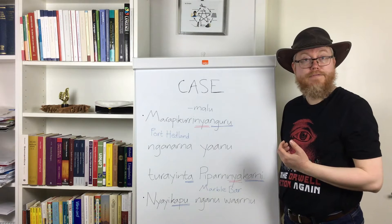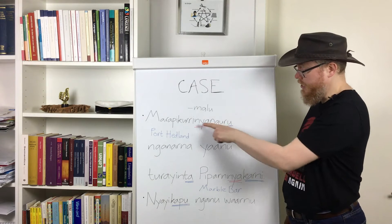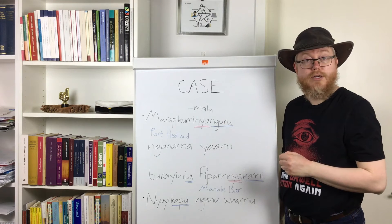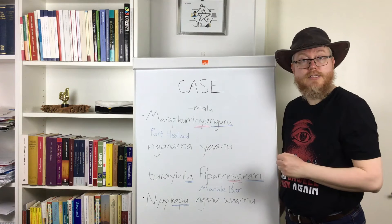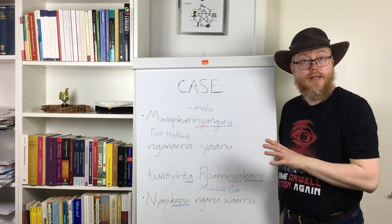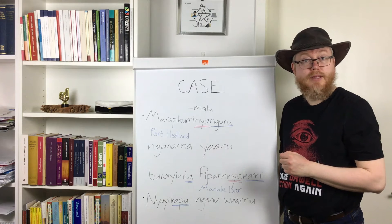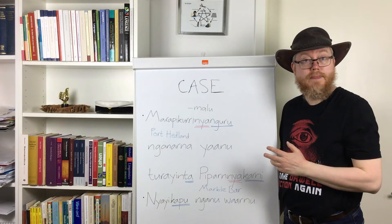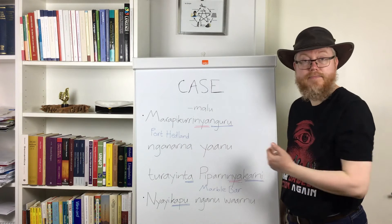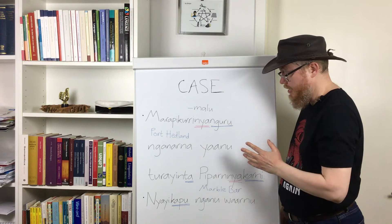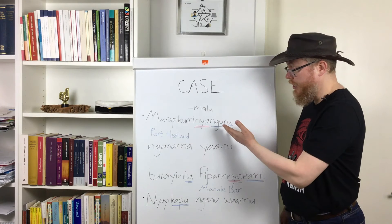Marabirgunja Ngoro is the Ngarla name for the town of Port Hedland — look it up on a map. Strictly speaking, Nja here is a suffix that is not part of the actual name. The name is Marabirgunja; Nja is a suffix that only occurs on toponyms, and it alternates with Malu. They are not part of the name — I will get back to these suffixes in a moment. So, from Port Hedland, or Marabirgunja, Ngana — first person plural exclusive — and Jaanu, 'go' in the past tense. So: from Port Hedland, we went.